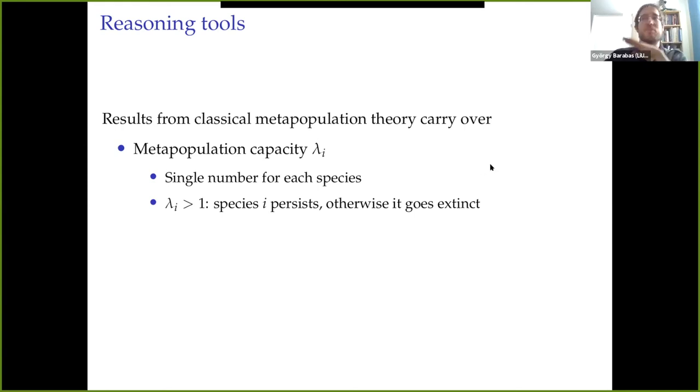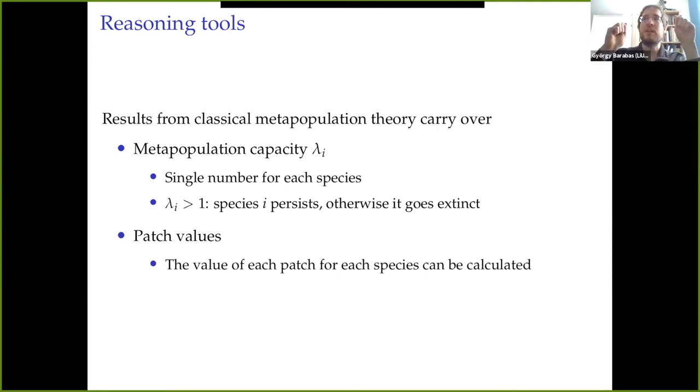The other thing is that we have a very useful tool from metapopulation theory: one can classify each patch of the landscape as being more or less valuable to the given population. There could be patches that are not so valuable, that means if we remove them, not much happens. And there are patches that are much more valuable, such that if I remove them, I reduce the population capacity of the species the most. So we can take advantage of calculating this order of patches. We can order the patches by importance and ask the question, what happens if we remove habitat patches based on their sequence in this order?